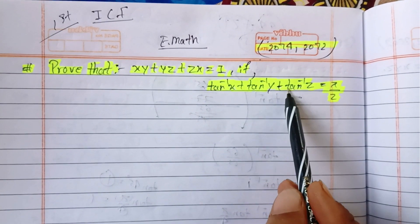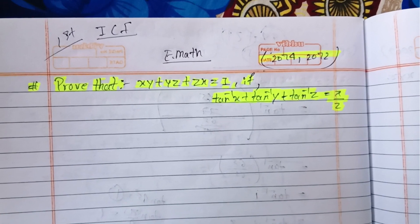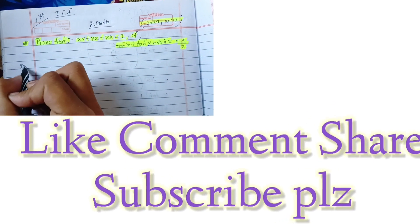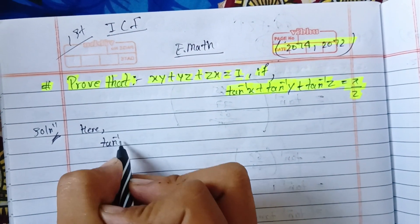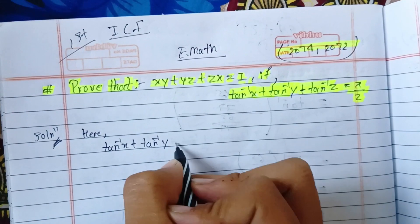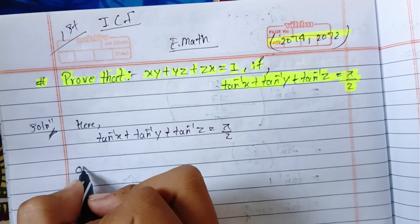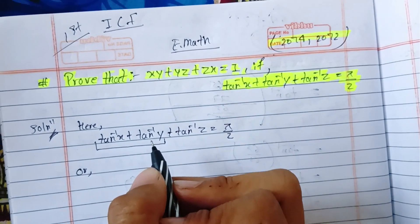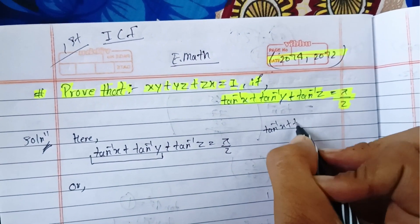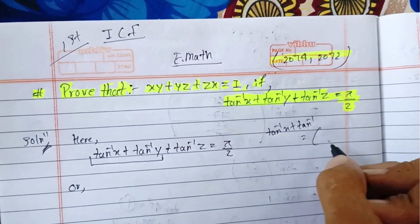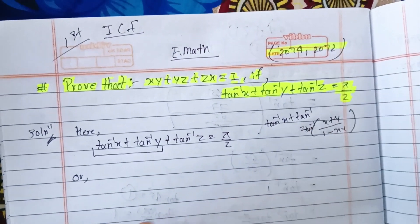In this question, we need to prove: tan⁻¹x + tan⁻¹y + tan⁻¹z = π/2. To solve this, we apply the formula for tan⁻¹x + tan⁻¹y, which is tan⁻¹((x + y) / (1 - xy)).